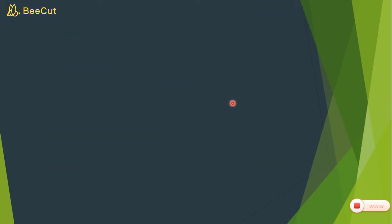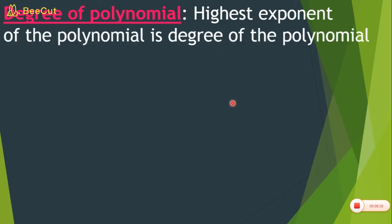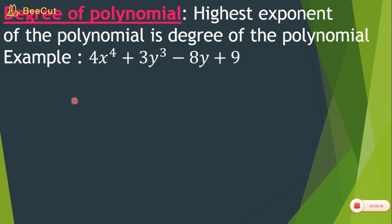Now come to degree. What is the degree of a polynomial? The highest exponent of the polynomial is the degree of the polynomial. For example, in a polynomial where the exponents are 4, 2, and 1 — the exponent of y is 1 — so the highest exponent is 4, and therefore the degree of the polynomial is 4.